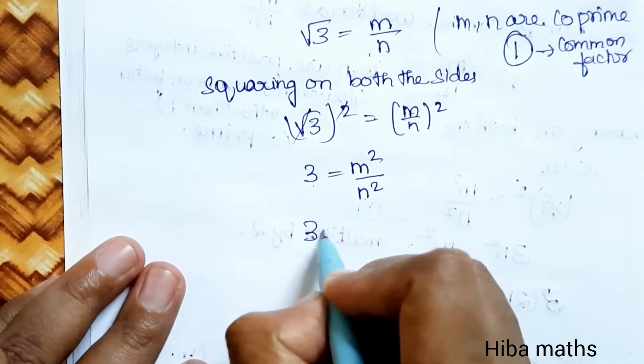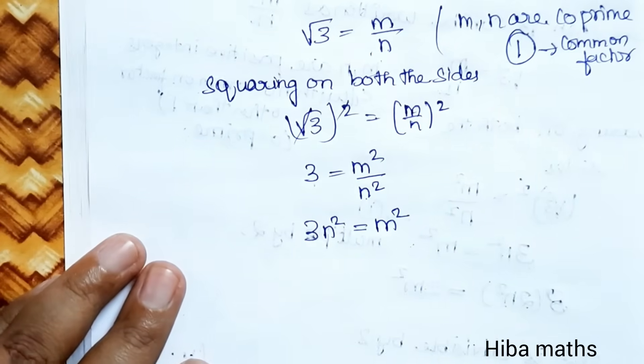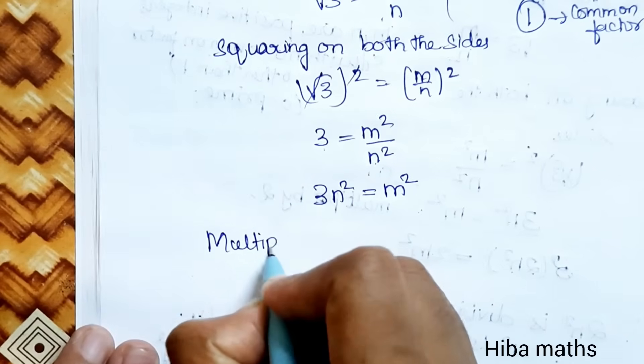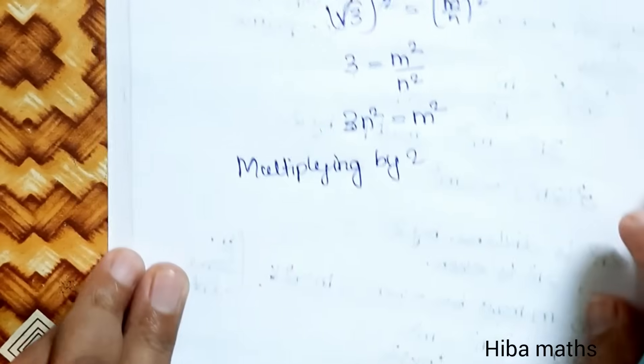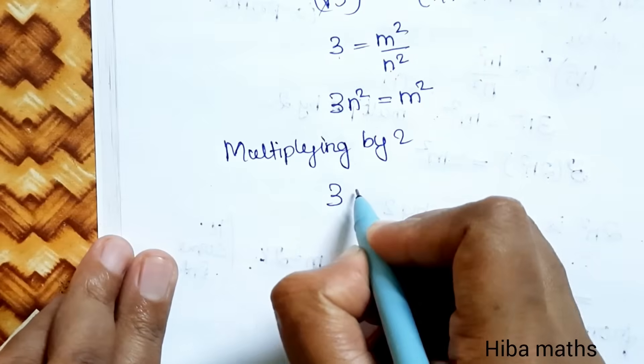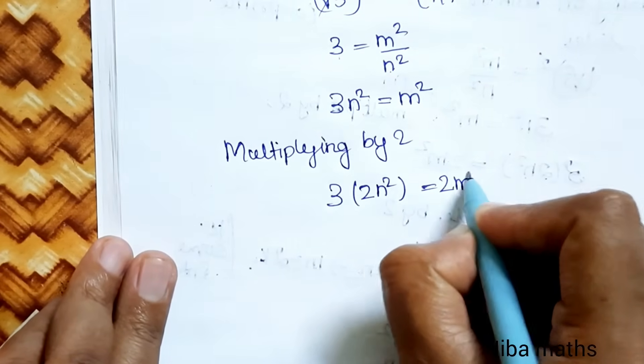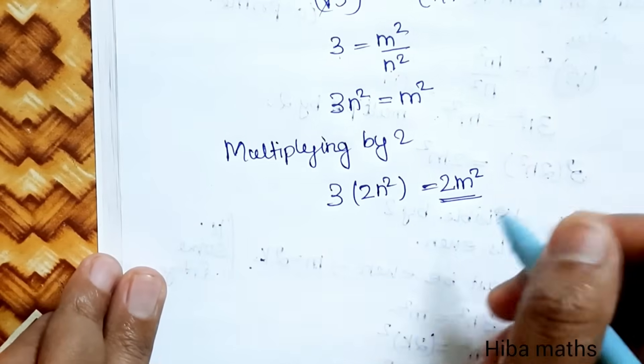Cross multiply: 3N square equals M square. Now, multiplying by 2: 3 into 2N square equals 2M square. This is why M square is an even number.